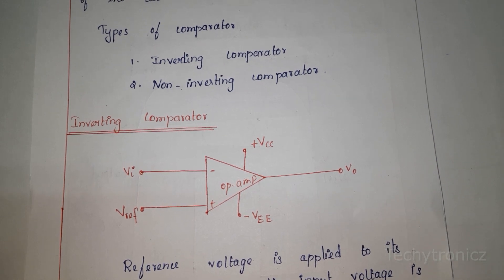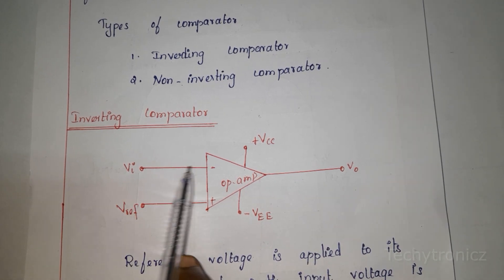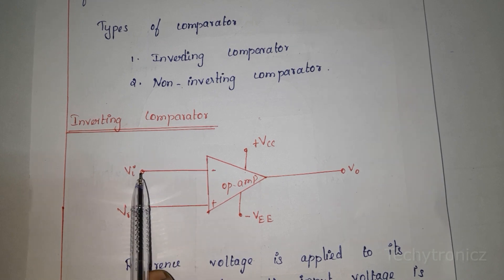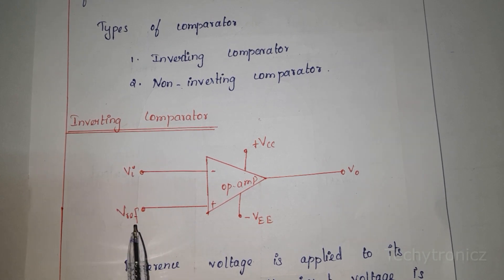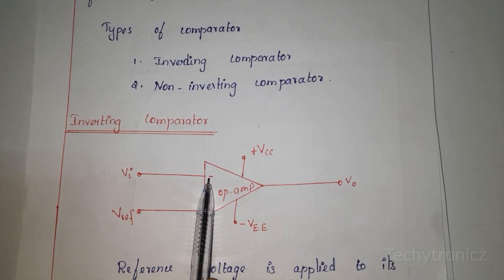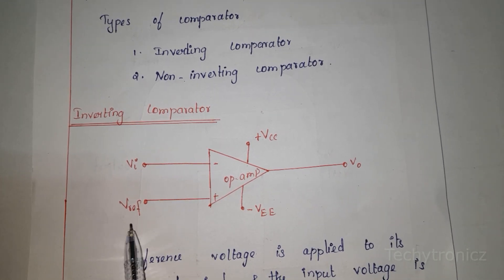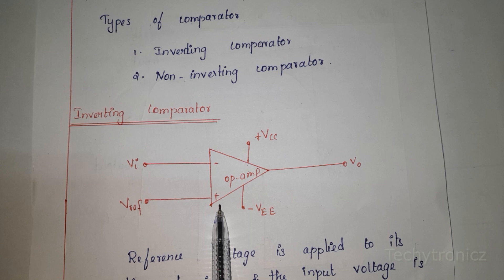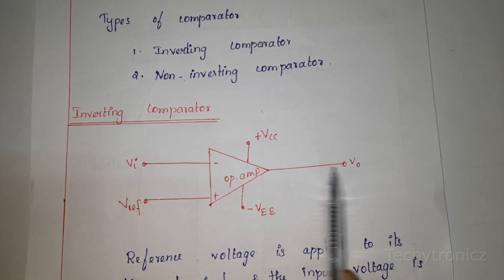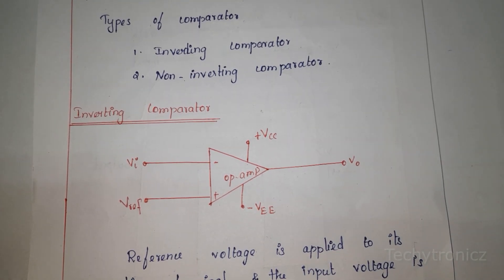In the inverting comparator, we give the input voltage to the inverting terminal. We compare the analog input voltage with a reference voltage. The input voltage is given to the inverting terminal, and the reference voltage is given to the non-inverting terminal. The output is taken from the sixth pin.